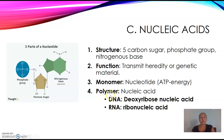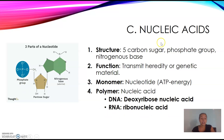The polymer is called nucleic acid. There are two types: DNA, which is deoxyribose nucleic acid, and RNA, which is ribonucleic acid. When we do genetics, you're going to know this very well. But for now, just know what it looks like and know the monomer and polymer.